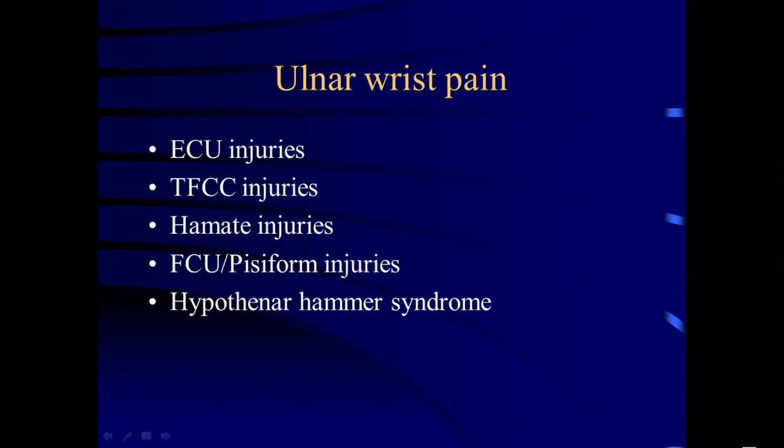Let's start with ulnar wrist pain because this is very common in both tennis and golf athletes, and there are certain structures that are particularly prone to injury. There's the extensor carpi ulnaris tendon, the triangular fibrocartilage complex, the hamate bone, the flexor carpi ulnaris tendon and its insertion at the pisiform, and then hypothenar hammer syndrome, which we'll also discuss.